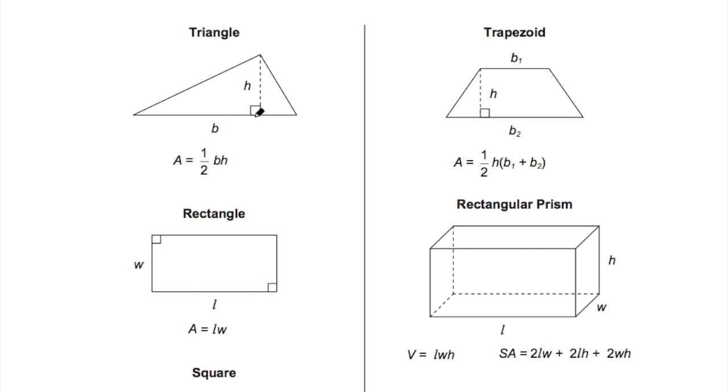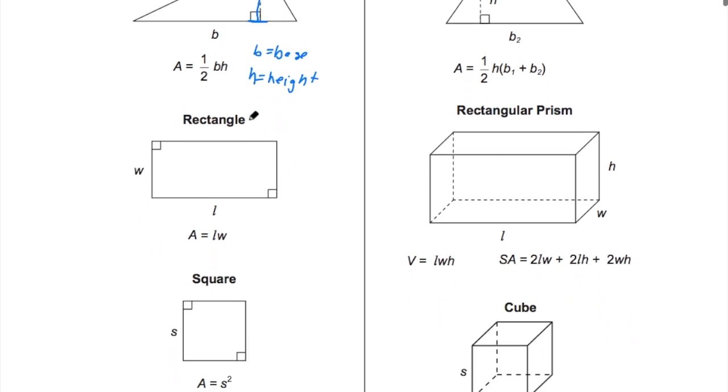So for a triangle, we have the area is one-half the base times the height. B here is base, h is height, that applies through all the formulas. The base and the height, how can we identify them? They always form a right angle. They're always perpendicular to each other in the diagram.